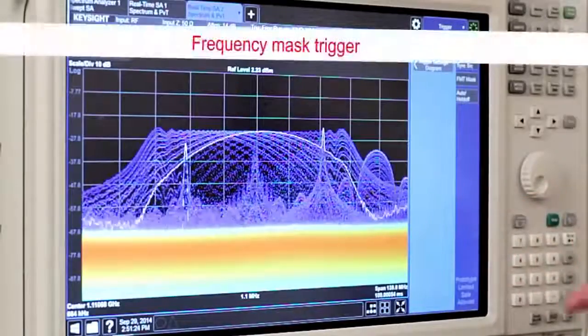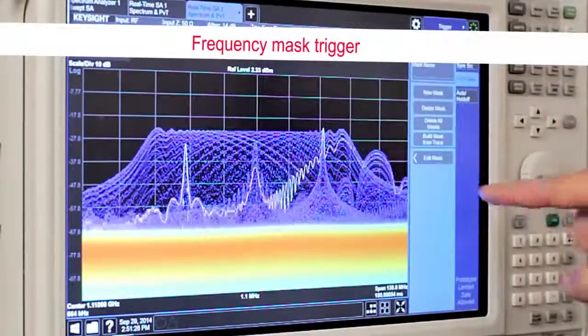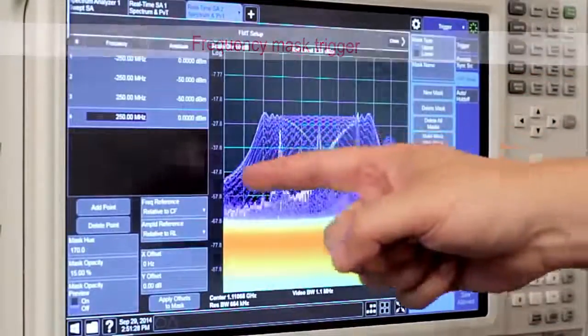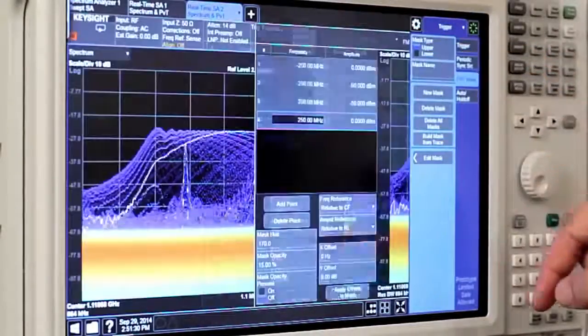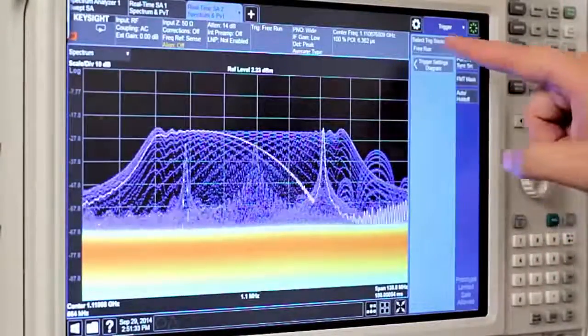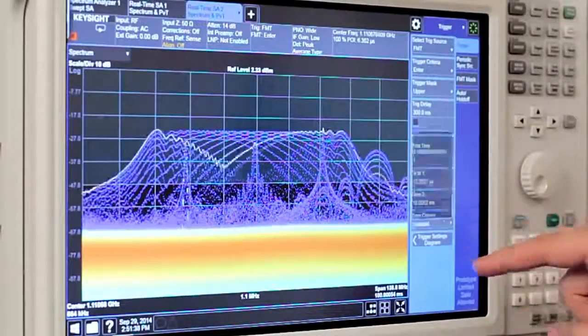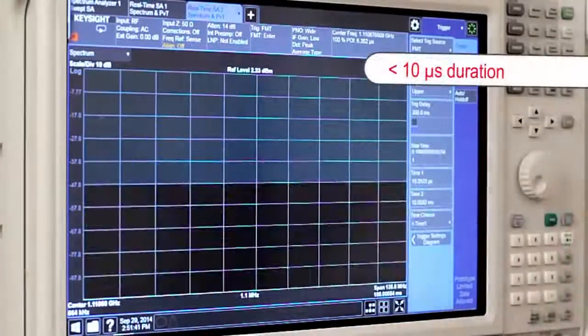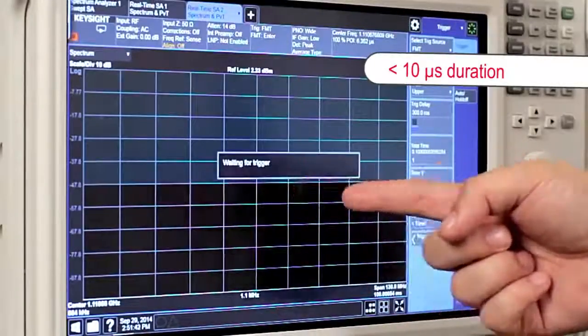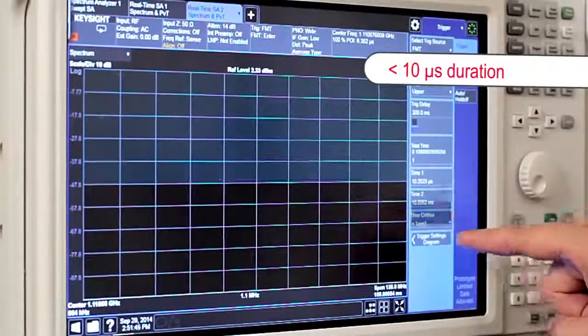I'm going to try and trigger on one of these signals using a frequency mask trigger. With the frequency mask trigger, we're going to look at the signals in the shaded region. I want to see if any of these signals are of a duration longer than 10 microseconds. By using the time-qualified trigger criteria, I can see that these signals are not less than 10 microseconds in duration.